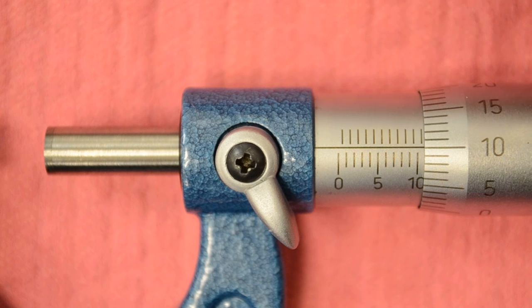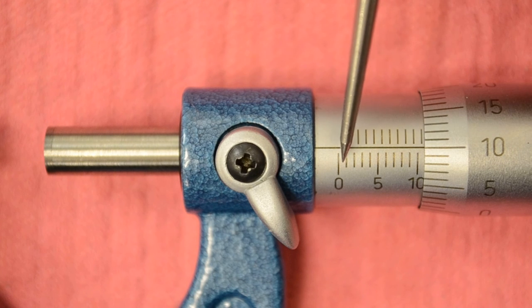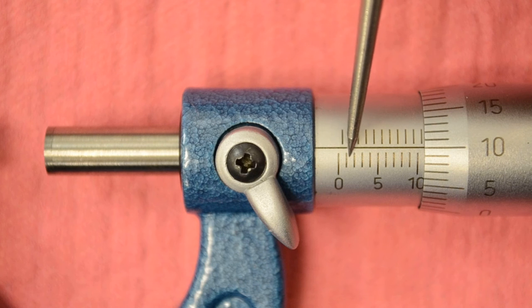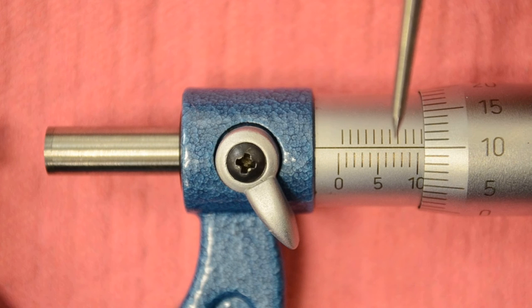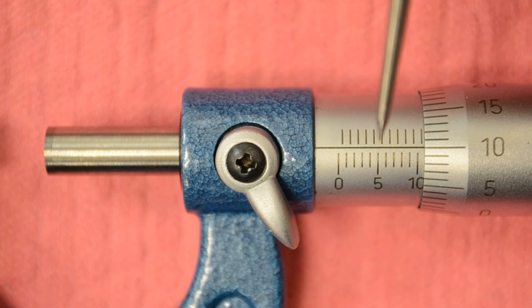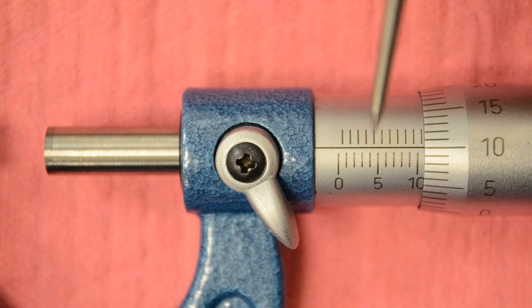So for this reading here we would count on the bottom these are millimeters. One, two, three, four, five and so on like that on the bottom. And on the top are half millimeters and you notice that the graduation marks don't touch the reference line.